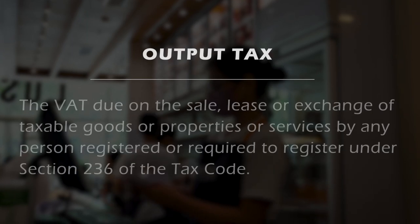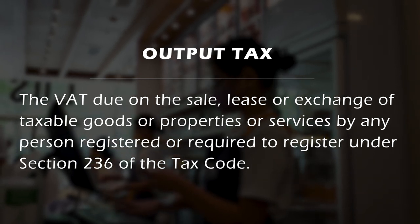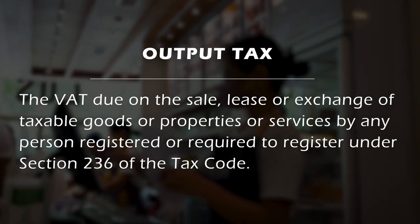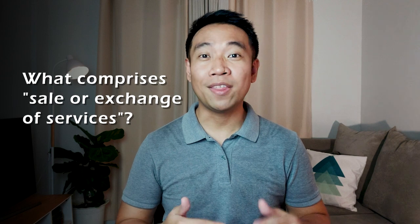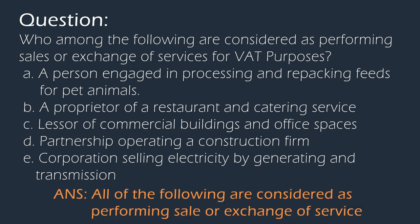Just make sure that you know the update on standard input tax or input VAT related to government transactions. With a rate of 12%, output tax is the VAT due on the sales, lease, or exchange of taxable goods, properties, or services by any person registered or required to register under Section 236 of the Tax Code, which is the administrative provision for registration requirements. The term sale or exchange of services means the performance of all kinds of services for a fee, remuneration, or consideration, whether in kind or in cash. For example, who among the following are considered as performing sales or exchange of services for VAT purposes?